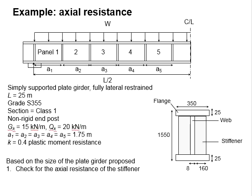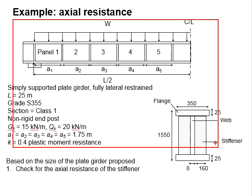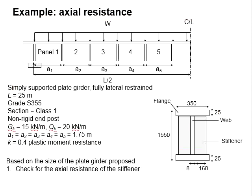Let us try an example to check for the axial resistance of a plate girder. Again, we are referring to the same set of questions, and this time you are asked to check for the axial resistance of the stiffener. You may pause the video for a while for you to work out the solution.